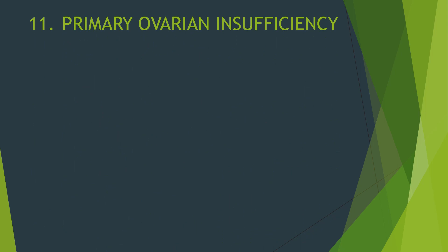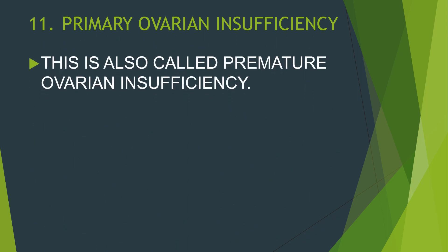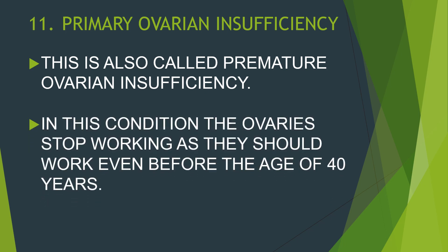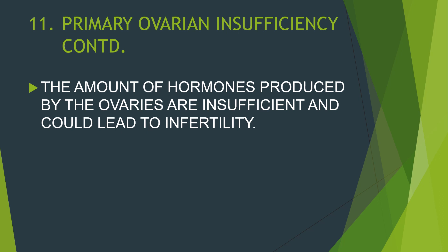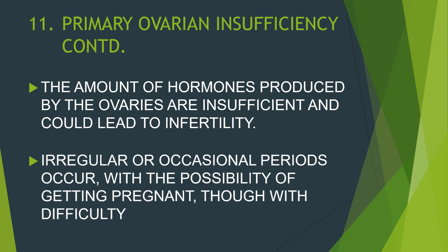Primary ovarian insufficiency, also called premature ovarian insufficiency, is another cause. In this condition, the ovaries stop working as they should even before the age of 40. The amount of hormones produced by the ovaries becomes insufficient, leading to infertility. Irregular or occasional periods may still occur, along with the possibility of getting pregnant, though with difficulty.